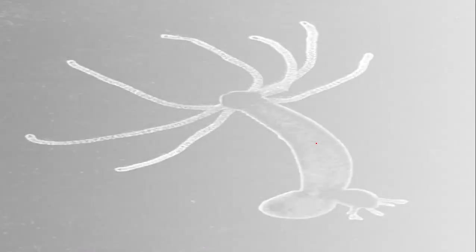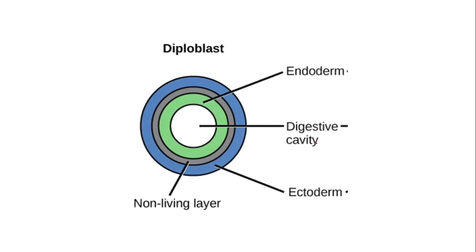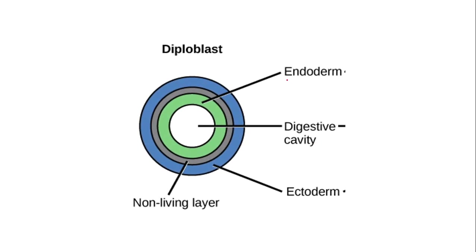Diploblastic animals are those animals in which, during their embryonic form, their body consists of two main layers: one is the endoderm and the second is the ectoderm. The endoderm is the inner layer of cells and the ectoderm is the outer layer of cells. Since hydra is a diploblastic animal, its body consists of these two principal layers.